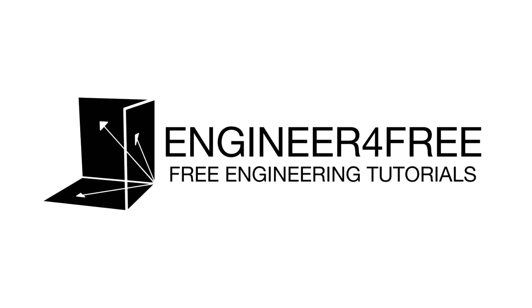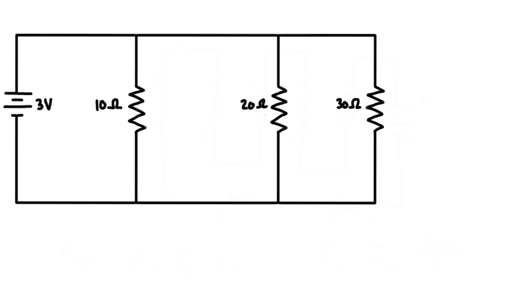Hey, welcome back. Here with an example on current division using parallel resistors. What we want to do is find the current flowing through each of the resistors and the whole circuit in general in this problem.